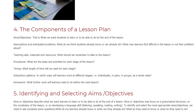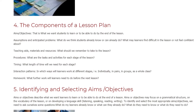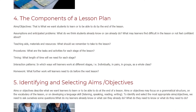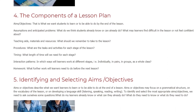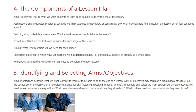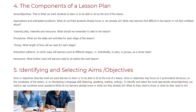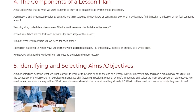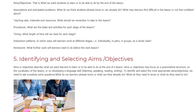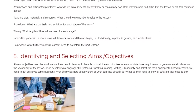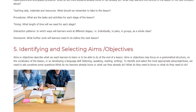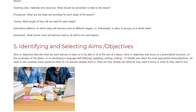Identifying and Selecting Aims or Objectives. Aims or objectives describe what we want learners to learn or to be able to do at the end of a lesson. Aims or objectives may focus on a grammatical structure, on the vocabulary of the lesson, or on developing a language skill — listening, speaking, reading, writing. To identify and select the most appropriate aims and objectives, we need to ask ourselves: what do my learners already know or what can they already do? What do they need to know or what do they need to do?